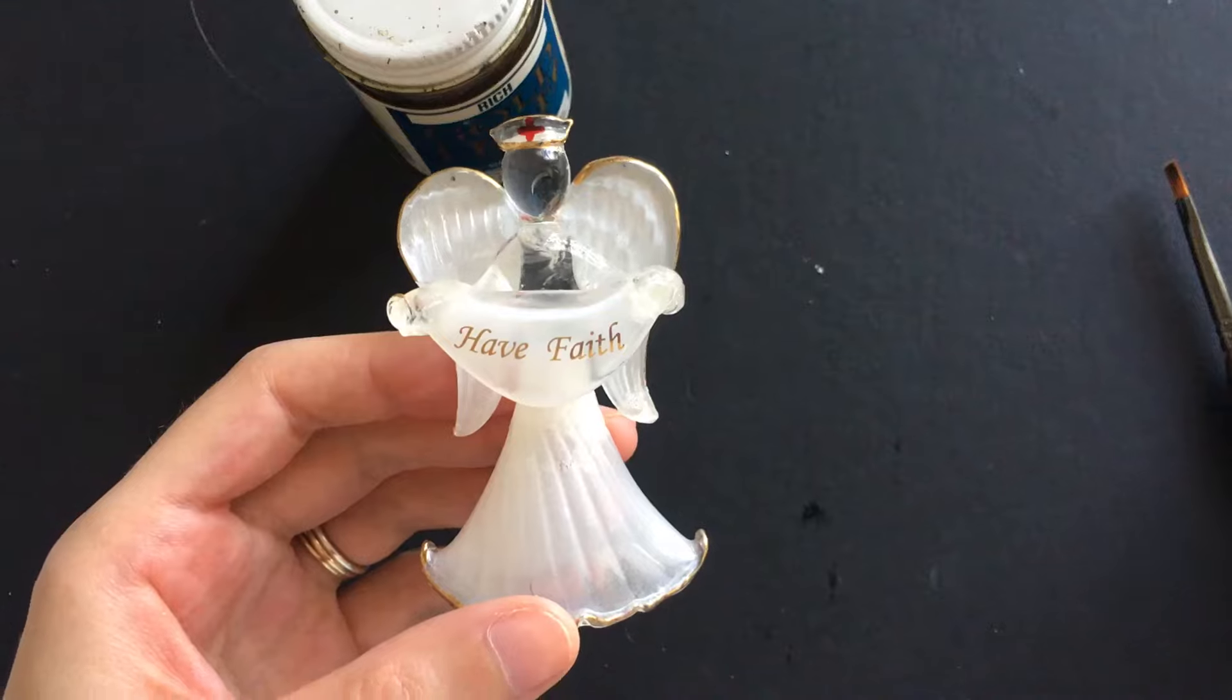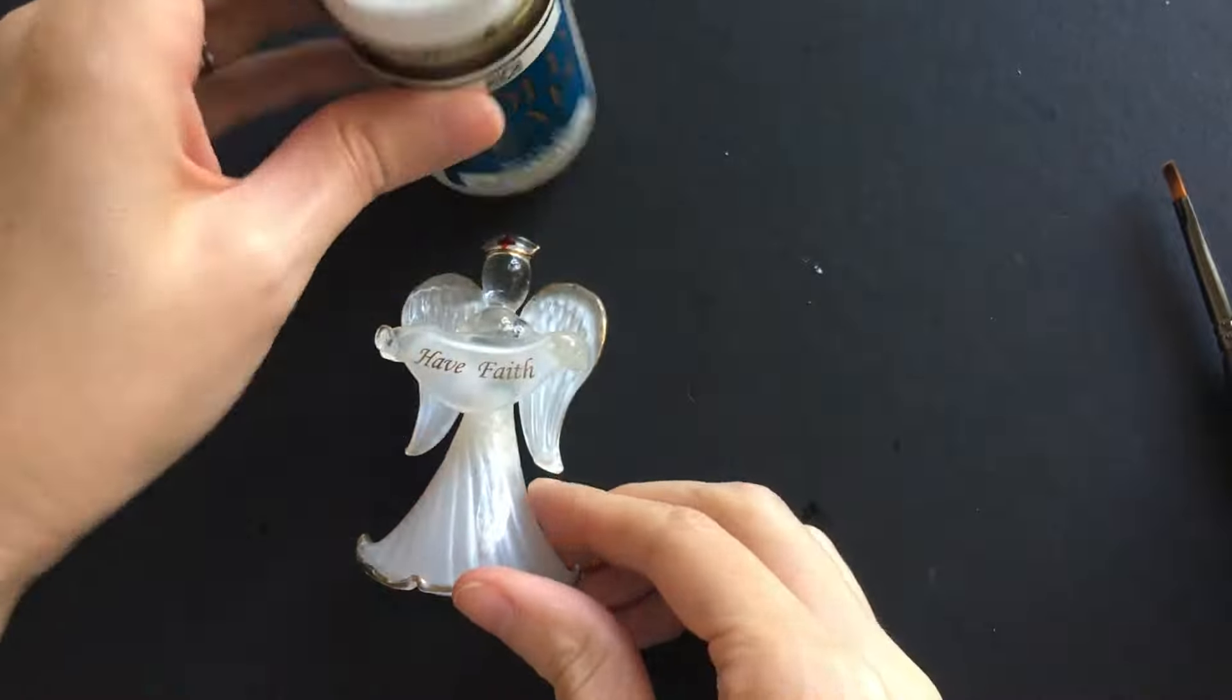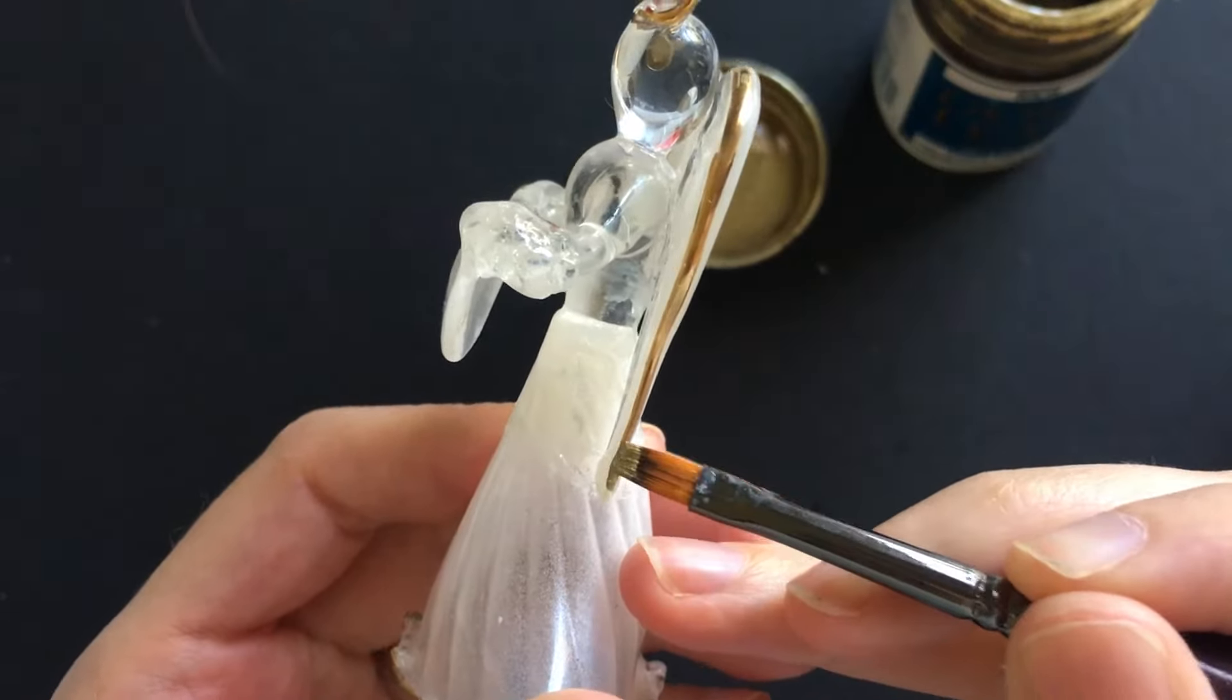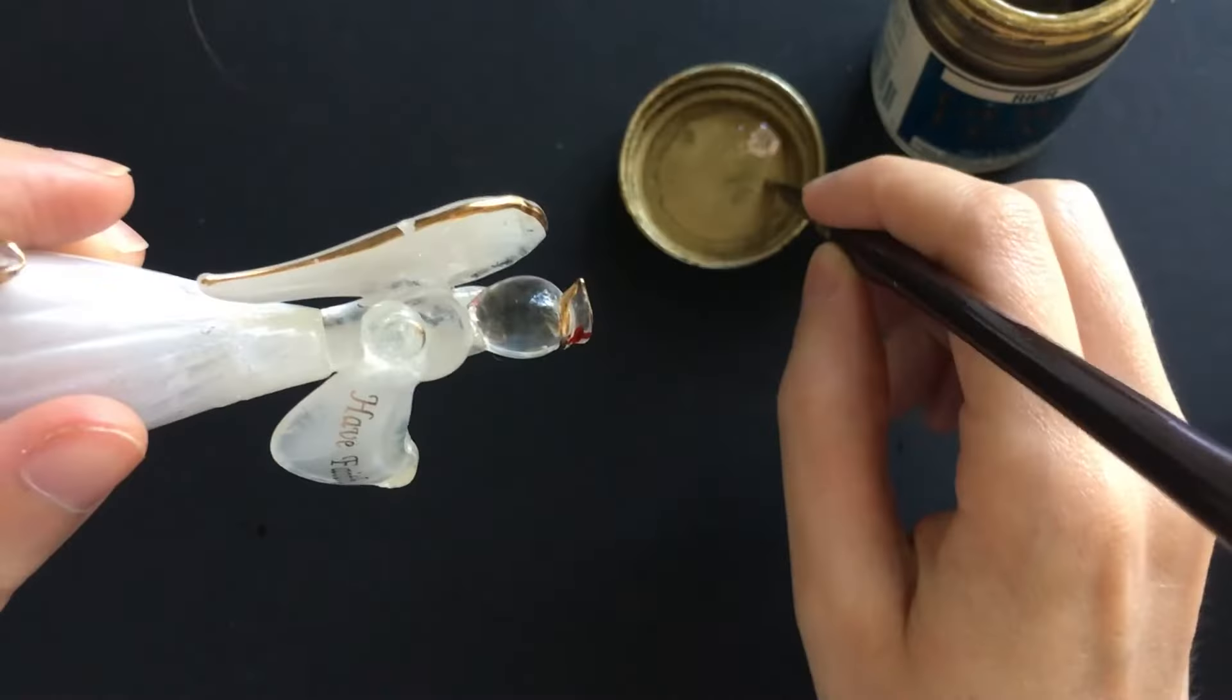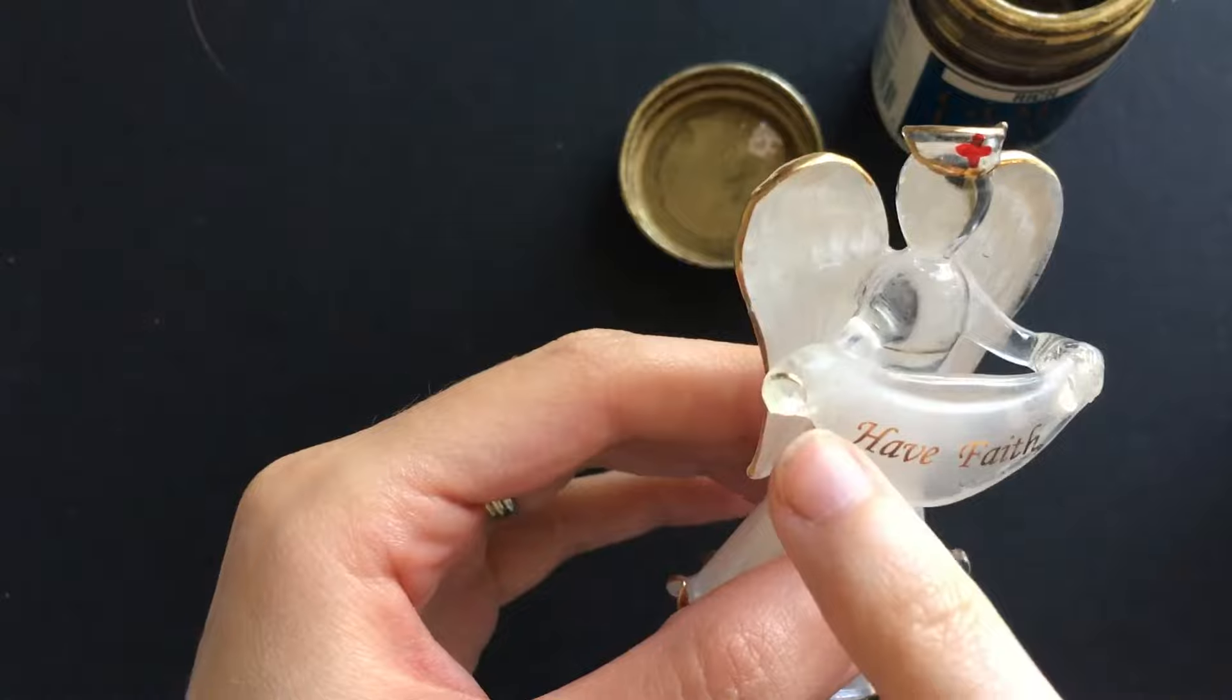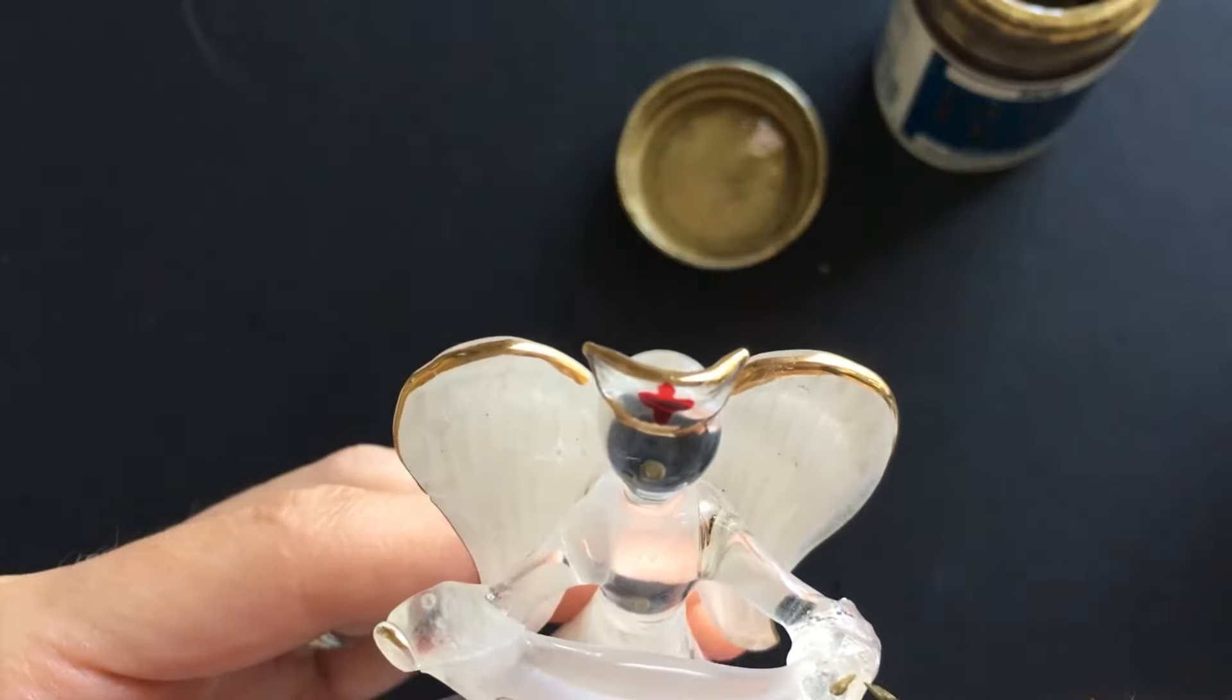Once everything's set I can use gold paint to fix those places where I had broken off before. And I'm going to make sure that the right side that had broken off before matches the left side.